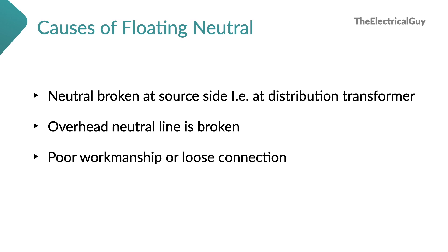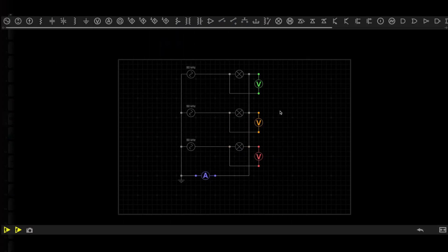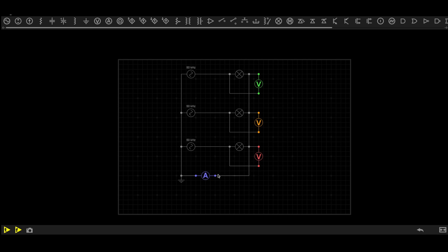Now let's go back to our circuit simulation where we will create floating neutral. Here, load is unbalanced. Neutral is carrying some current. Now let's say the neutral is broken. I'll delete the neutral from load. When I delete the neutral, see what happens.